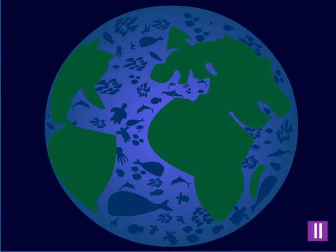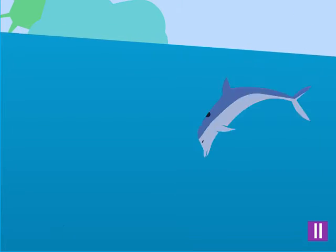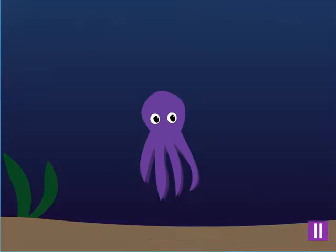There are all kinds of animals and plants that live in the different oceans. Some live near the top of the ocean and some live deep in the ocean near the bottom.